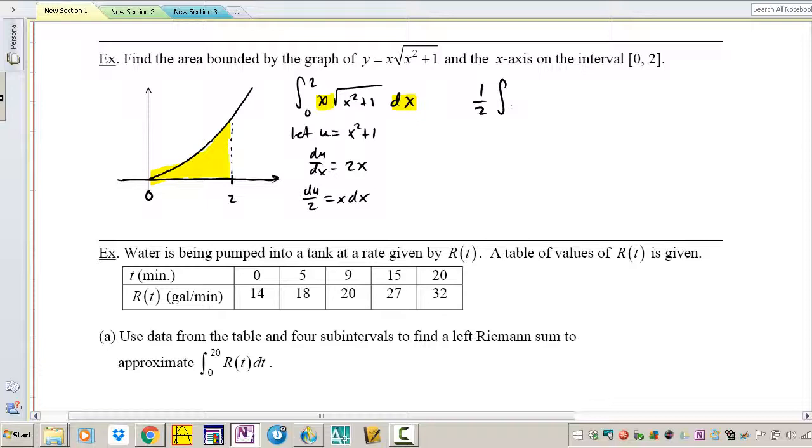So rewriting the integral, 1 half du of u, and what is u? u is x squared plus 1 and it's being raised to the 1 half power because it's square root. And let's go ahead and apply our limits of integration. If I plug in 2 into u it's a 5, if I plug in 0 into u it's a 1, so it's really from 1 to 5.